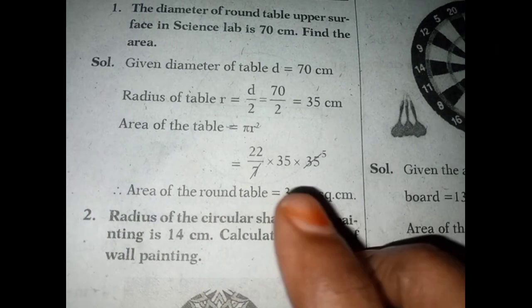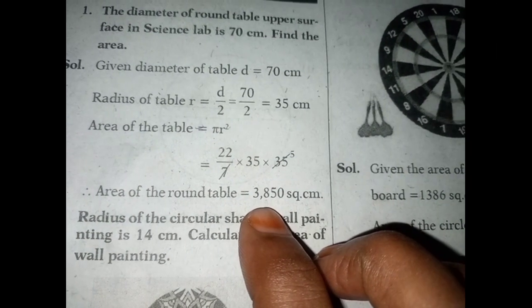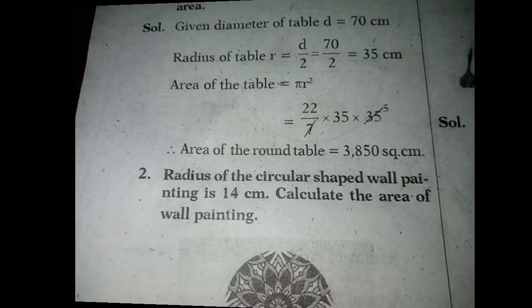Area of the round table is equal to 3850 square centimeters. Second problem.